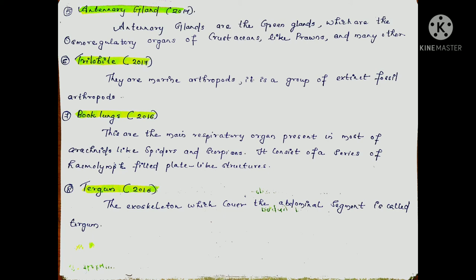The next question is book lungs, asked in 2016. Book lungs are the main respiratory organs in most arachnids like spiders and scorpions. They consist of plate-like structures through which hemolymph circulates for gas exchange.